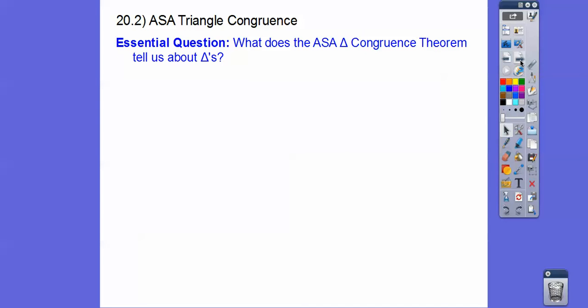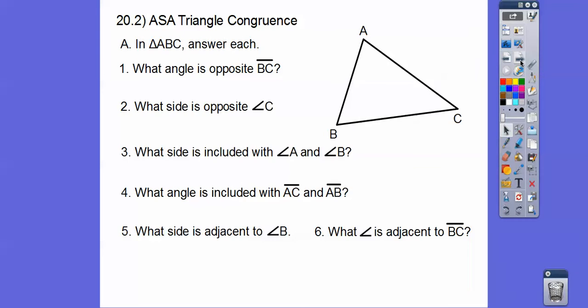Our question here is: what does the ASA, which is the Angle-Side-Angle Triangle Congruence Theorem, tell us about triangles? Before we answer that, let's answer some questions about opposite sides and angles, and adjacent sides and angles.